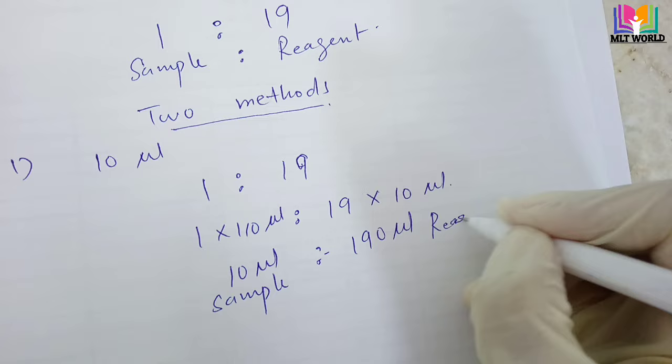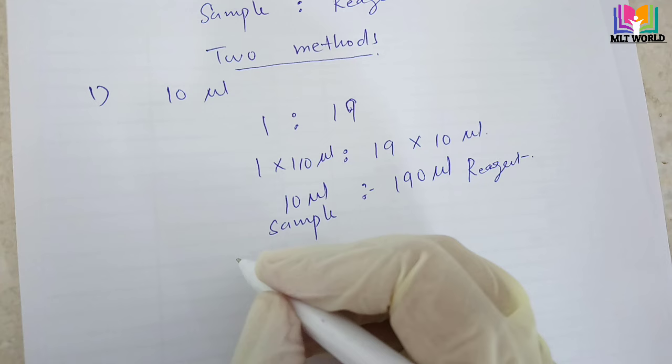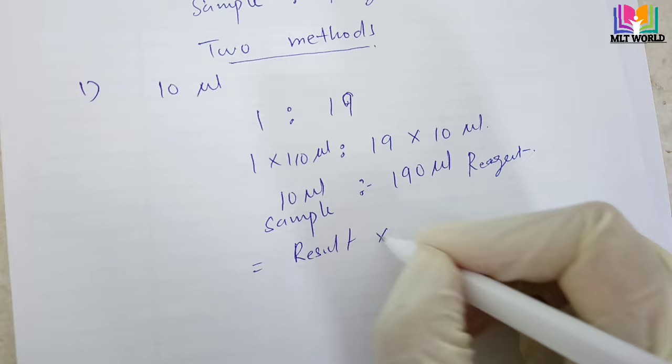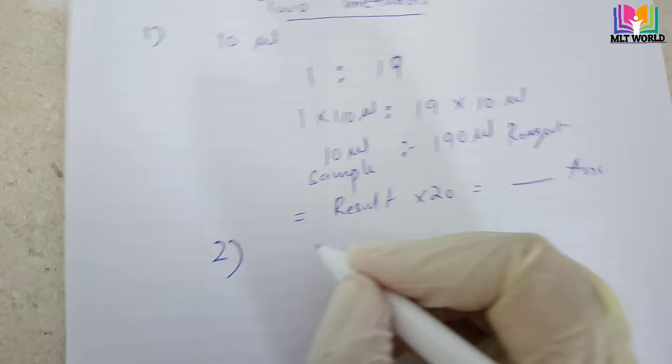So this dilution is a 1 to 20 dilution with a sample of 10 microliters. Always remember that we have to multiply the result with the factor, not with the quantity of sample — because the quantity of sample is according to our need. The factor we are using is what we multiply with, so the result will be multiplied by 20.